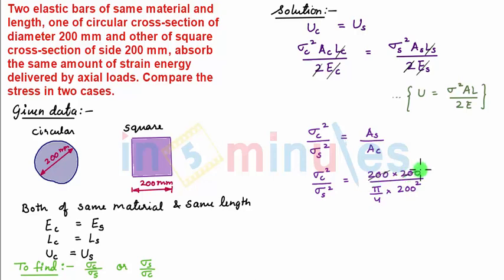We see that this 200 squared and this 200 squared gets cancelled so that we have the ratio of sigma_C upon sigma_S as square root of 4 by pi. Now, this is equal to 2 by root pi.